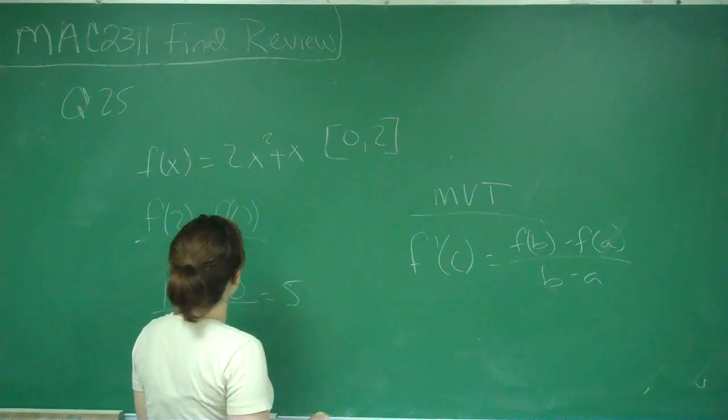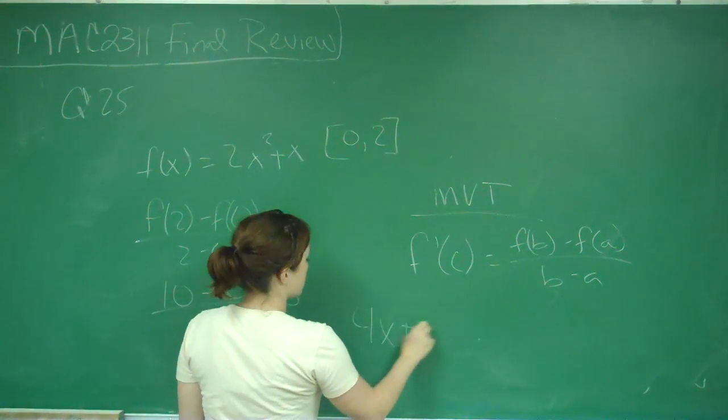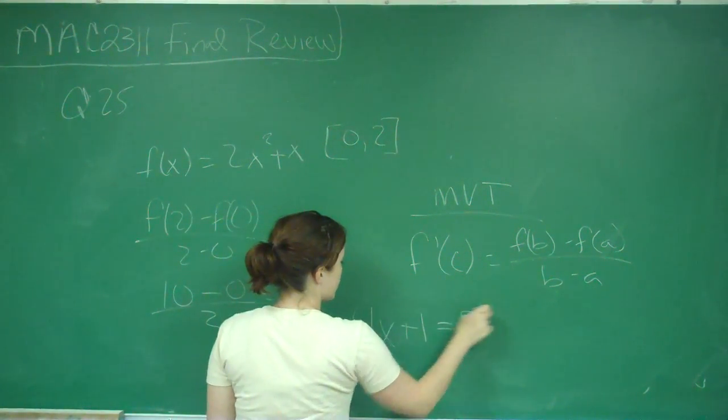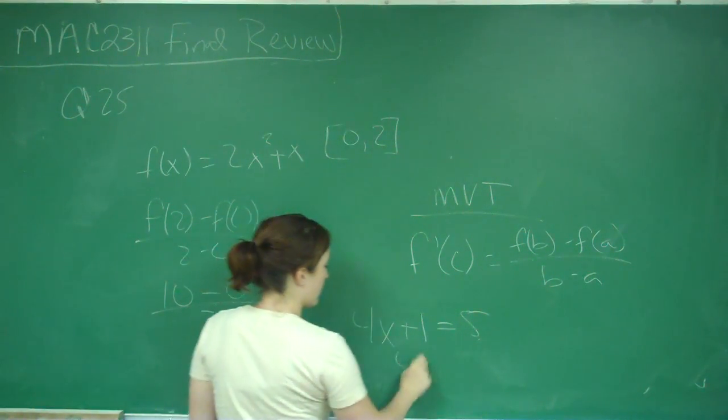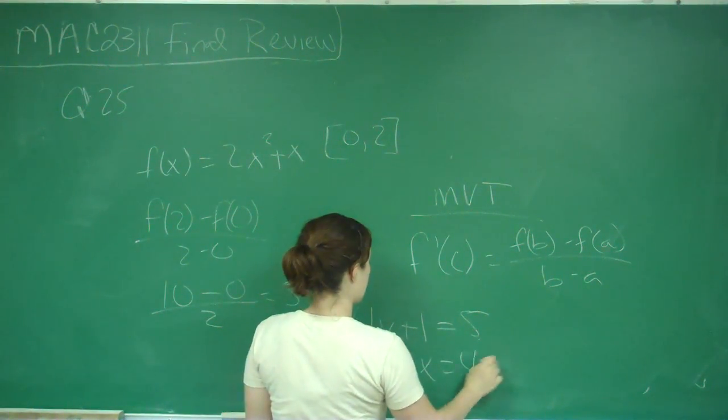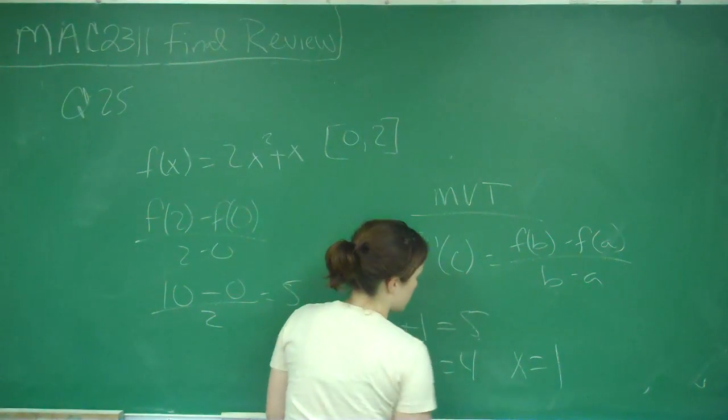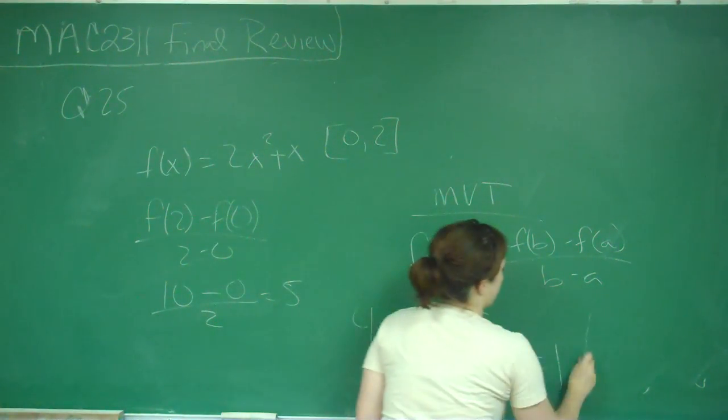So the derivative of the function is 4x plus 1, and I'm setting it equal to 5. So I subtract 1 and I get 4x is equal to 4, so therefore x is equal to 1, and that is answer choice A.